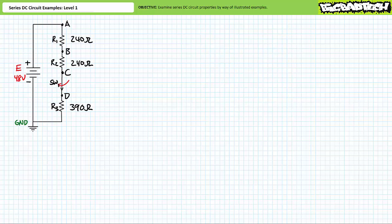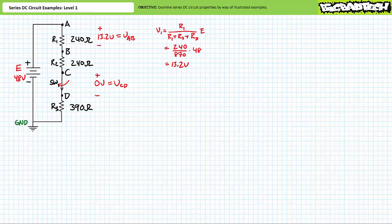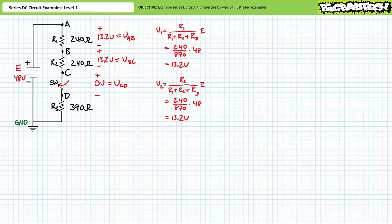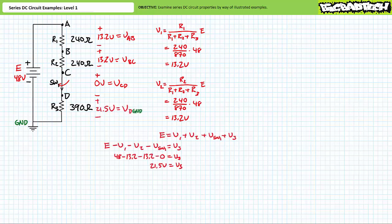In scenario two, the switch closes and everything changes when current starts flowing through this system. Individual elements will now experience a voltage drop. We assume the switch to be an ideal switch, presenting no resistance to current flow, so the switch will experience no voltage drop — VCD equals 0 volts. An application of the voltage divider rule demonstrates V1 to be 13.2 volts, so VAB equals 13.2 volts. Another application of the voltage divider rule solving for V2 demonstrates V2 to also be 13.2 volts, so VBC is 13.2 volts. An algebraic manipulation of the KVL equation for V3 demonstrates V3 to be the remaining 21.5 volts, so VD with respect to ground is 21.5 volts.